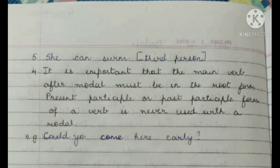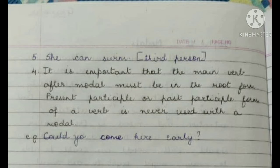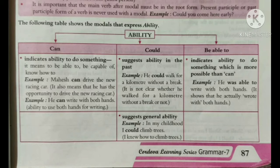The fourth feature is that after a modal, we must always use the main root form of the verb. For example, if the word 'can' is a modal, and we use the verb 'come', it must be in its main form. We cannot use the present participle or past participle — we cannot use 'came'. So we need to use the root form of the verb after any modal. Let us now see how different modals are used to express different meanings in a sentence.